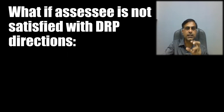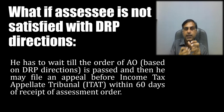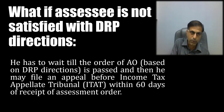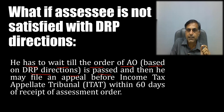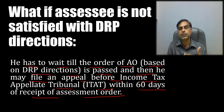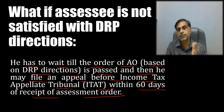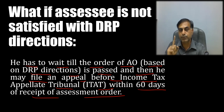Now, what if the assessee is not satisfied with the DRP directions? Suppose the DRP has simply agreed to whatever variations are proposed by the AO — then what will you do? The assessee has to wait till the order of the AO based on the DRP direction is passed, and then he may file an appeal before the Income Tax Appellate Tribunal within 60 days of the receipt of the assessment order. You cannot file an appeal against the DRP direction as such; you have to wait for the AO to finally pass his order based on DRP directions, and then file an appeal directly before ITAT — not before CIT Appeal.